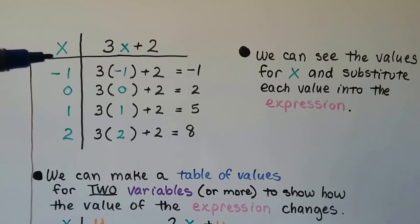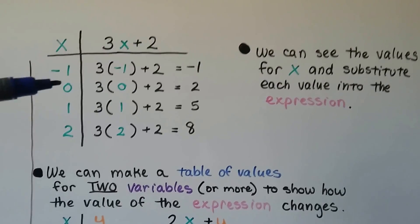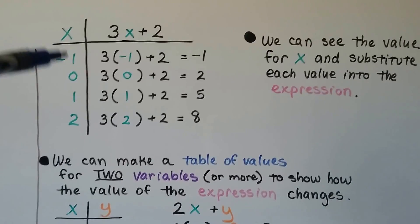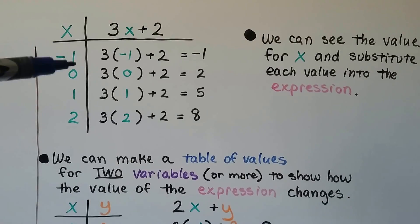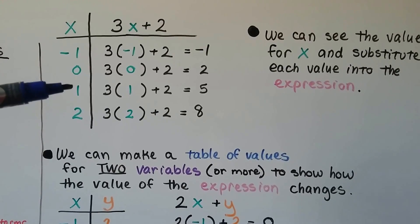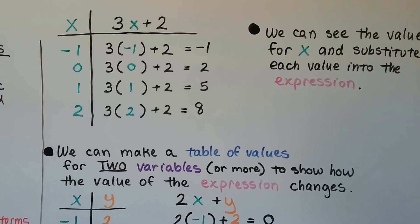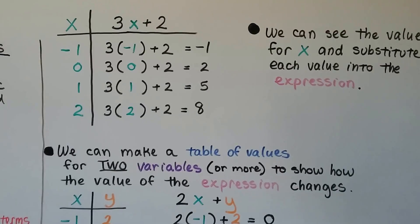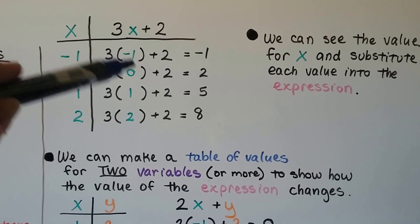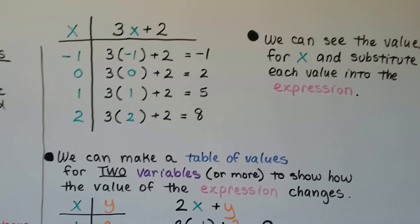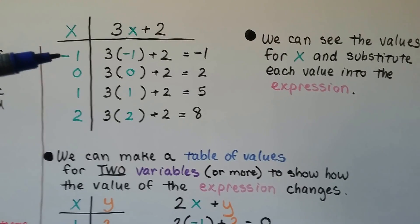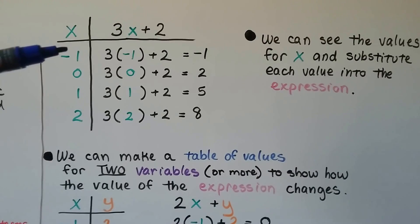A table of values will typically have some negatives, a zero, and some positives. They don't have to be one right after the other — whatever value is on the x side gets substituted in. They're usually in size order, but not necessarily consecutive.